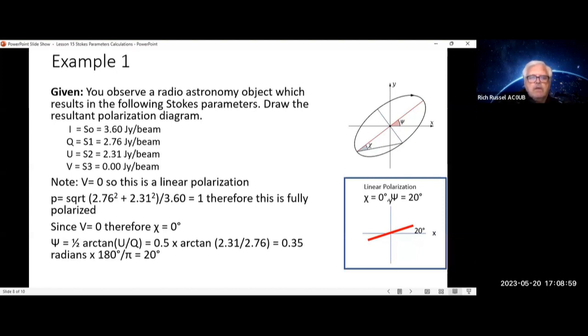To convert that to degrees, you multiply it times 180 degrees over pi, and that equals 20 degrees. So you see the diagram over there where you see the psi value of 20 degrees.